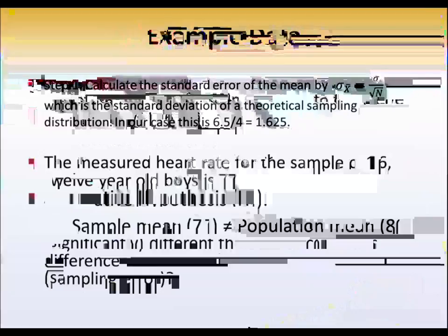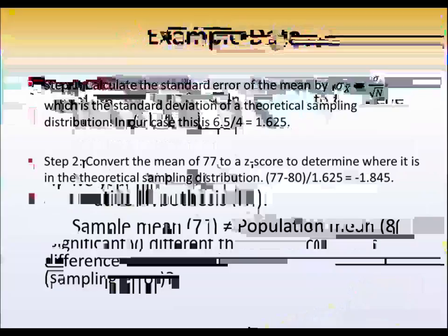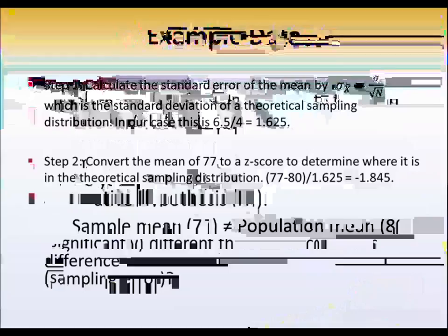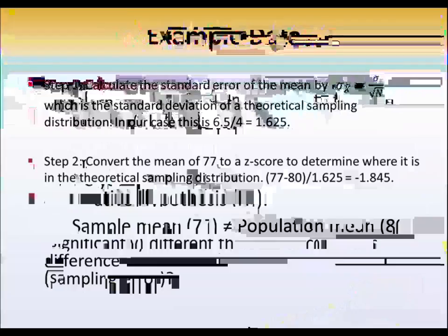Step 3, if we compare the absolute value of 1.845 to 1.96, remember that the z-score of 1.96 means anything exceeding that value would only occur 5% of the time by chance.